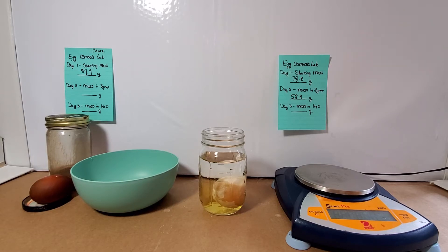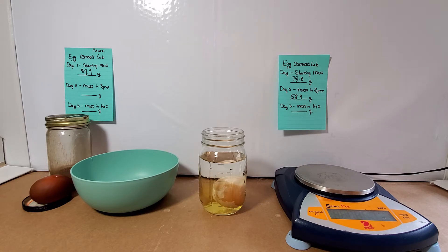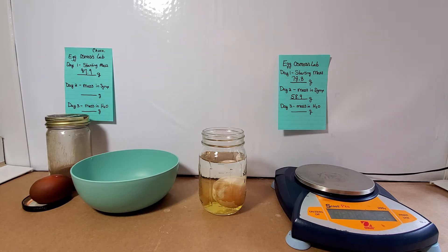Hello and welcome, this is Mrs. Rowe again, and welcome to video number four, day three of our observations with our egg osmosis lab. This is part of our biology from home series. Today we are going to look at our observations and find the mass of our eggs soaking in water overnight. So just a quick recap: we've soaked our egg in vinegar to remove the shell, then we used it as a model for an animal cell, and we first soaked it in syrup.